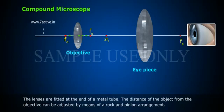The lenses are fitted at the end of a metal tube. The distance of the object from the objective can be adjusted by means of a rack and pinion arrangement.